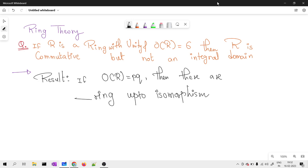The result that we are going to use is: if my ring is of the order p into q, where p and q are nothing but distinct prime numbers, then there are total 4 rings up to isomorphism.